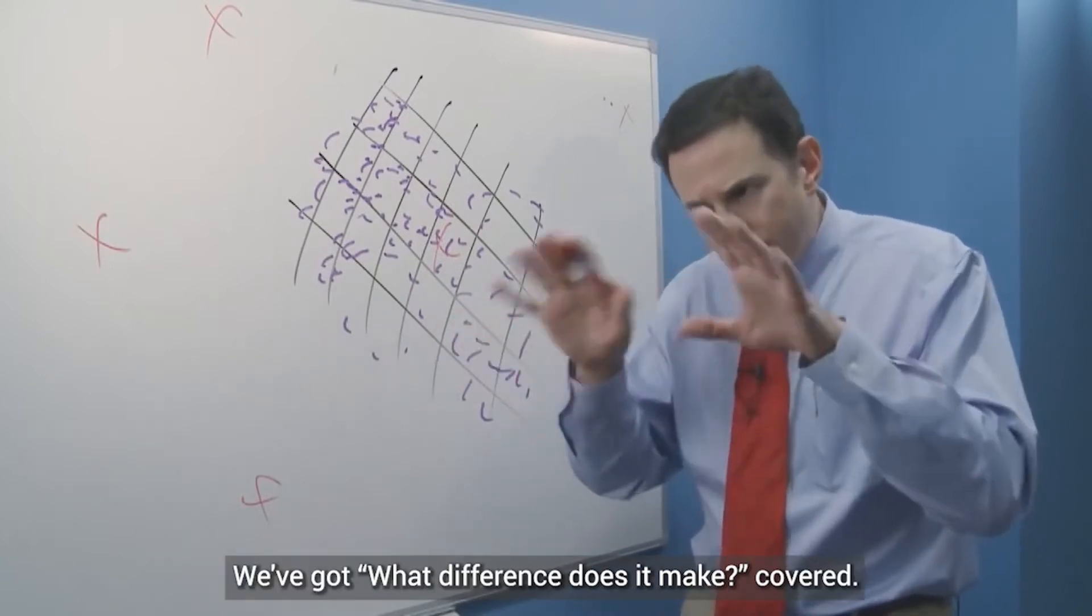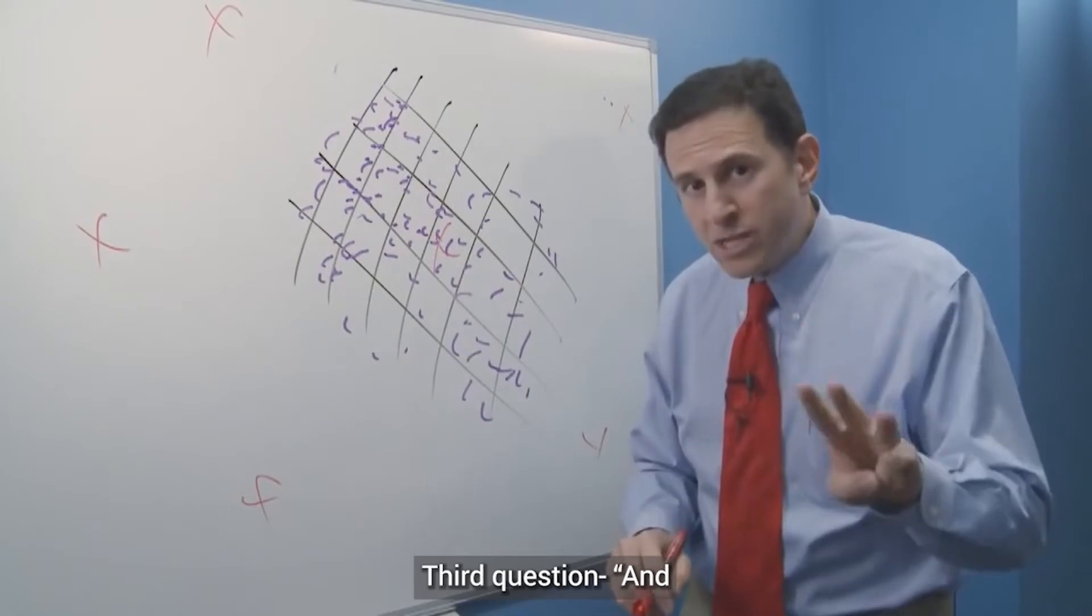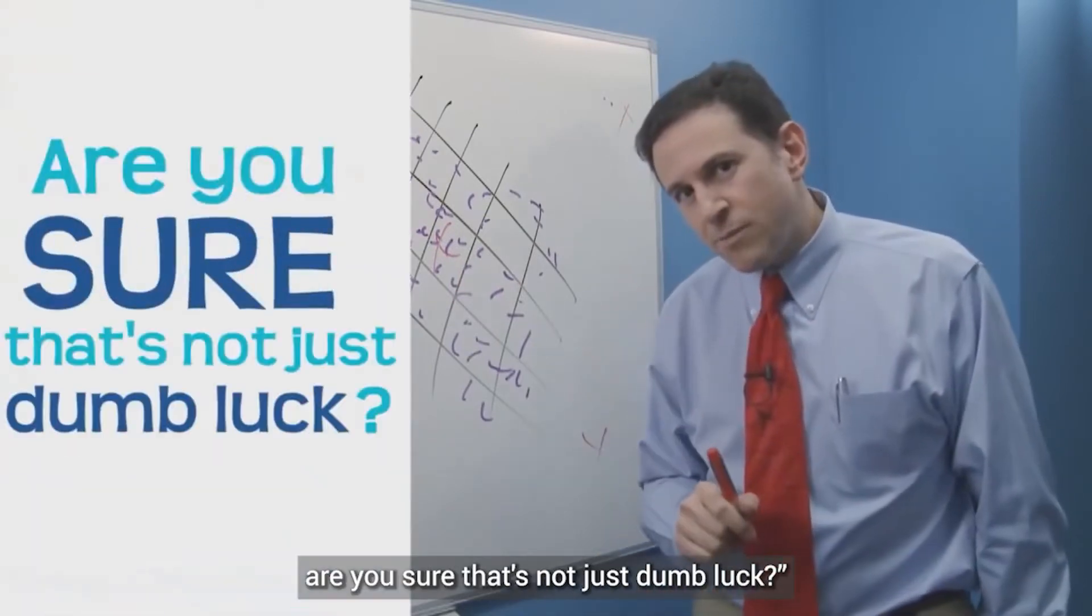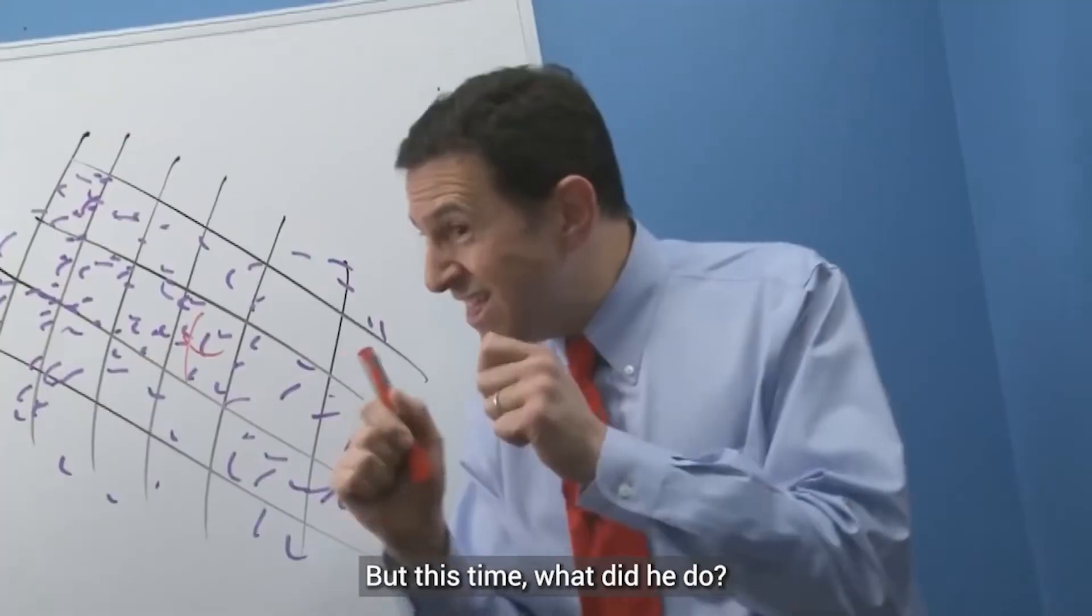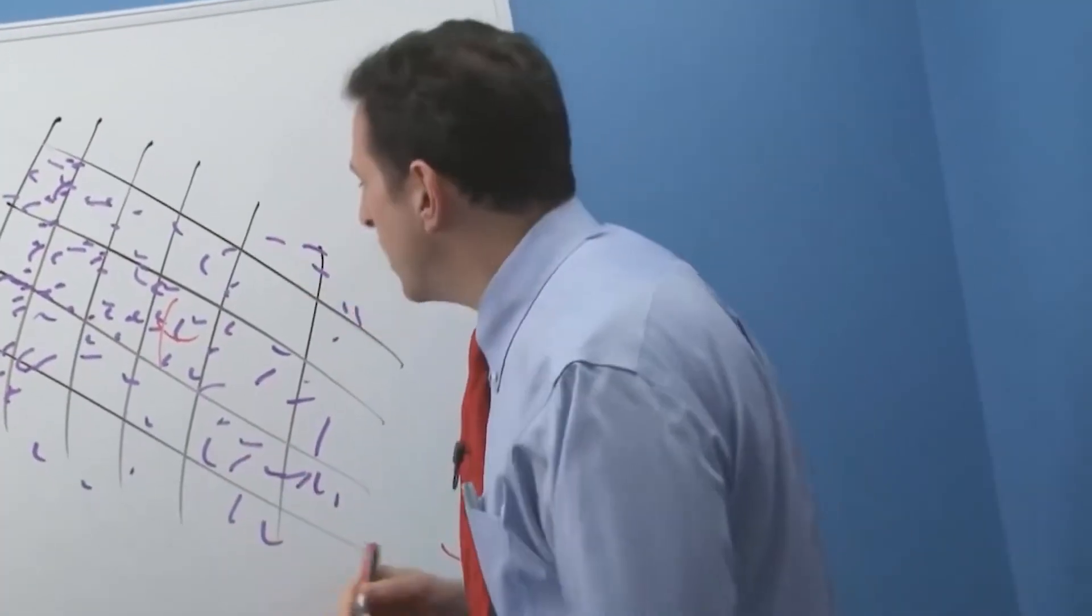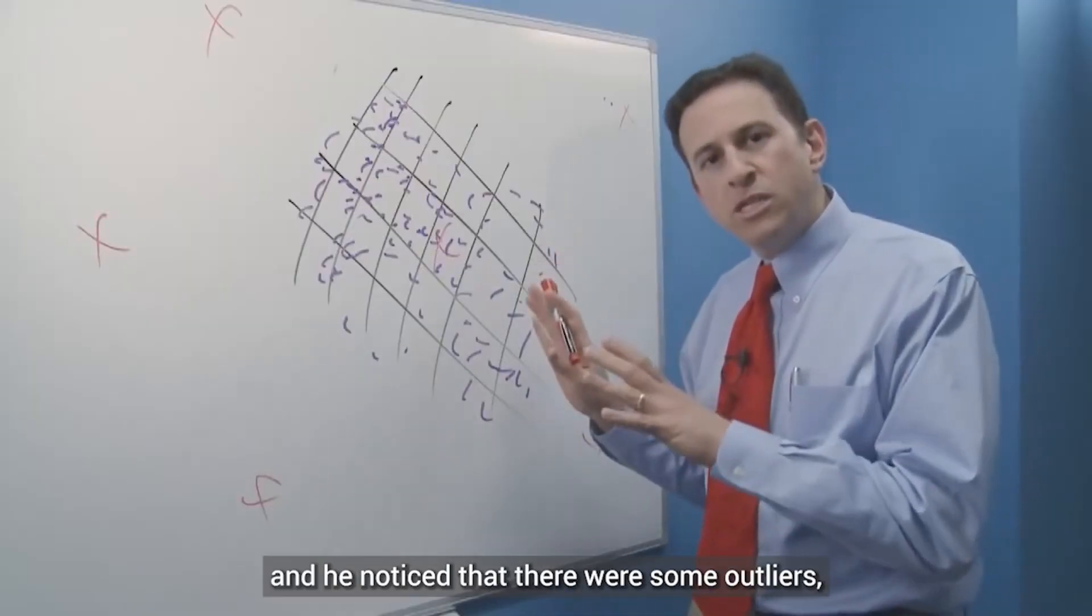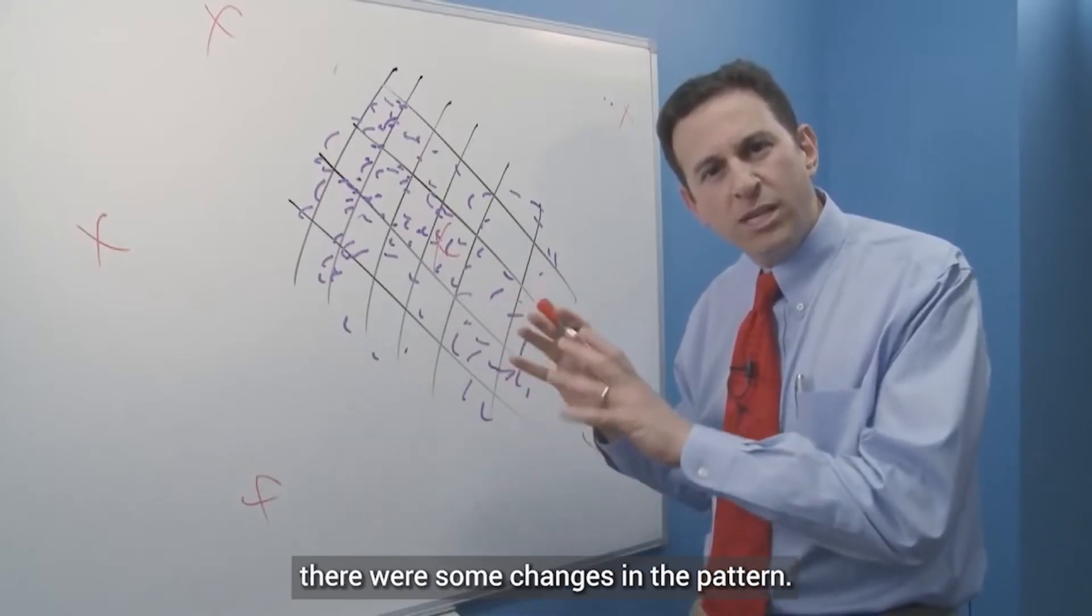Okay, so we've got meaning. We've got what difference does it make covered. Third question. And are you sure that's not just dumb luck? And this is the tricky one. This is the one that usually takes a lot of math. But this time, what did he do? He took a look at his map, and he noticed that there were some outliers. There were some changes in the pattern.